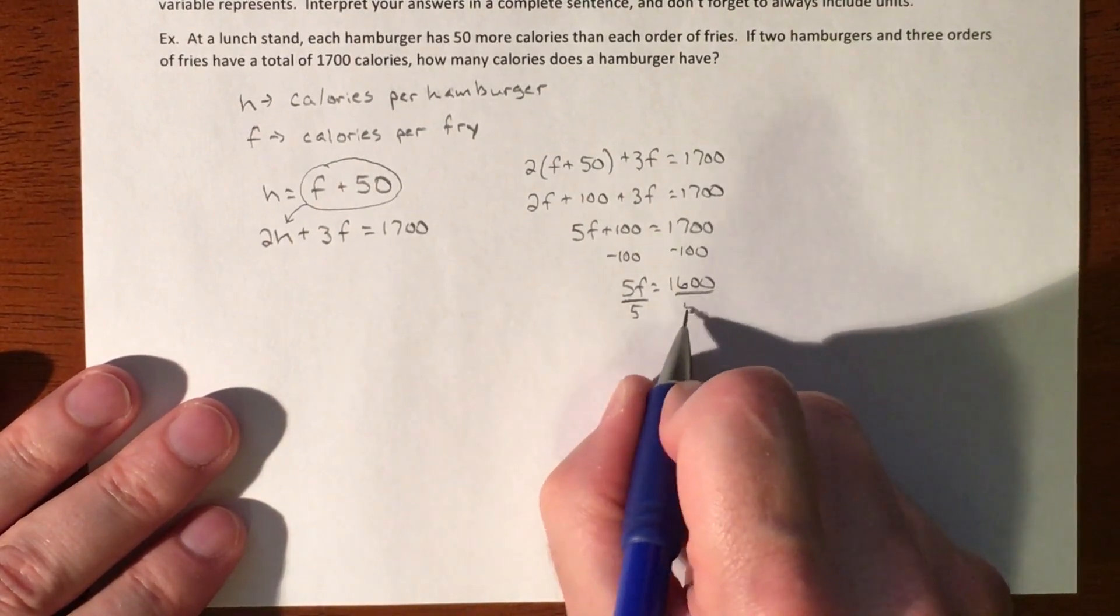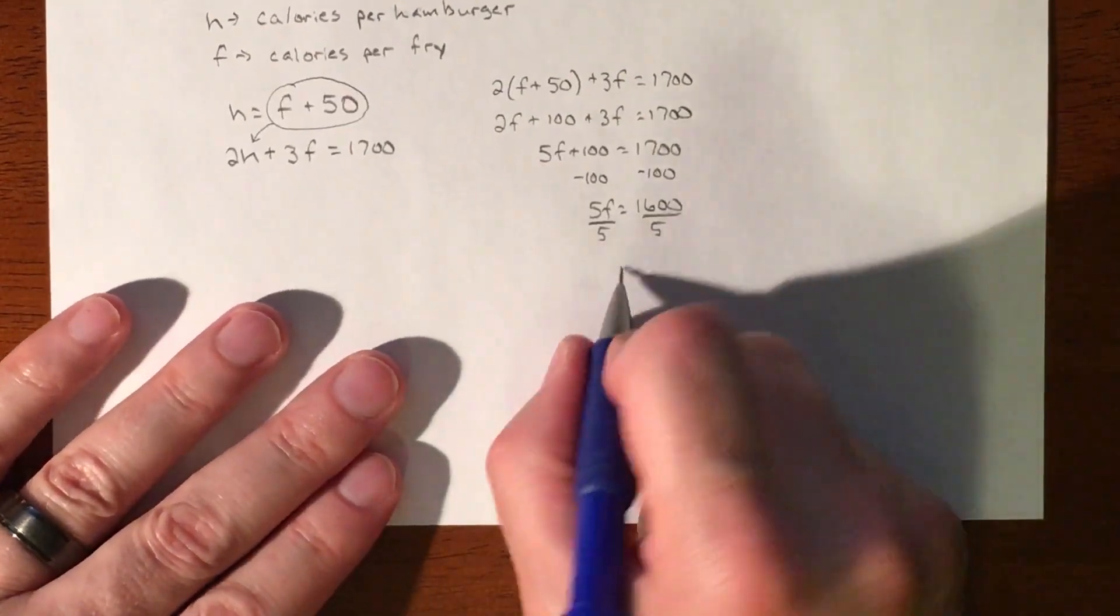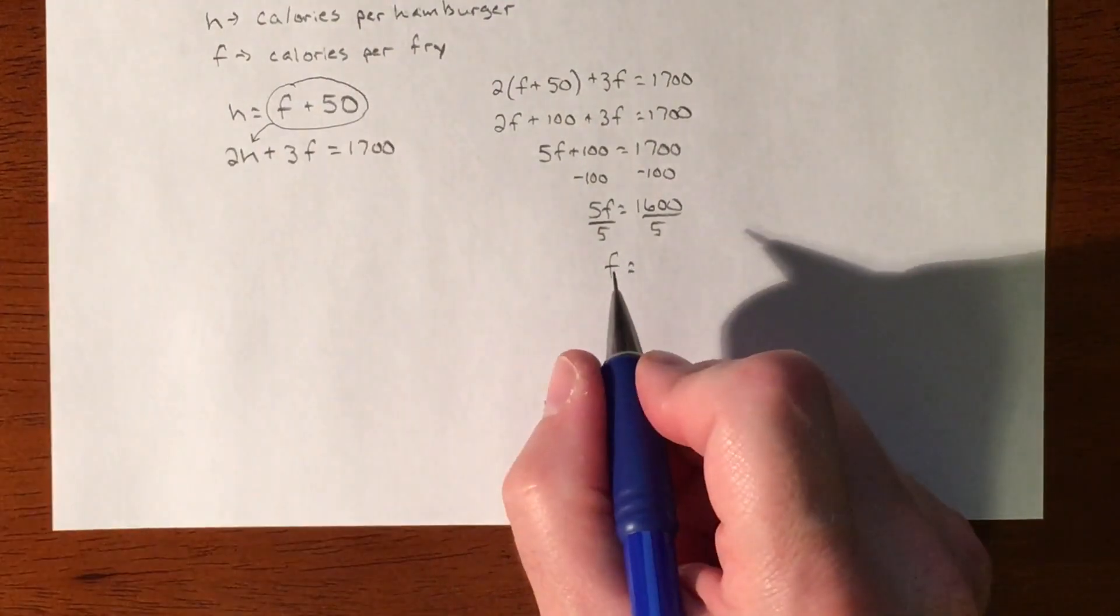We'll divide by 5, and so our french fries have 320 calories.